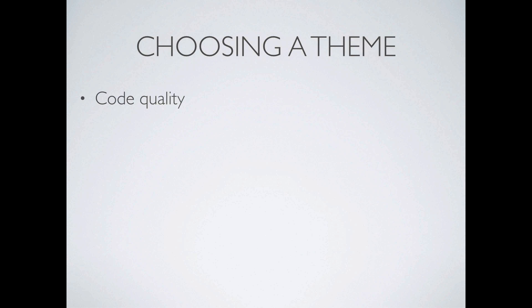Some other things to think about when choosing a theme: code quality is a big one you really want to assess. Not all of us can read through the whole set of code. The way you'd get at this is to go on Google, do a search, and see what other people are saying about the theme. Just type in the theme name and 'review' and you'll get masses of results and can get a feel pretty quickly for what others think. Be warned: it is the internet, anyone can say anything. Don't just take the first article as gospel — try and get the overall feel. If you're getting a lot of positive articles and a few negative, it's probably okay. If you're getting a lot of negative and a few positive, probably move on.